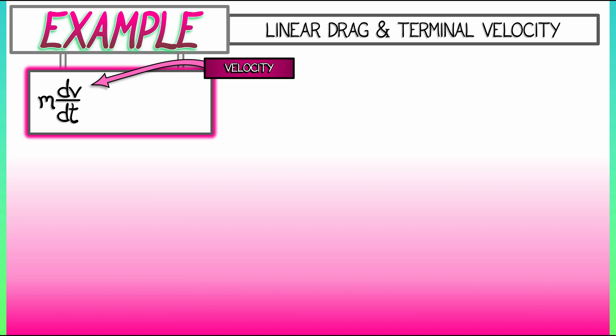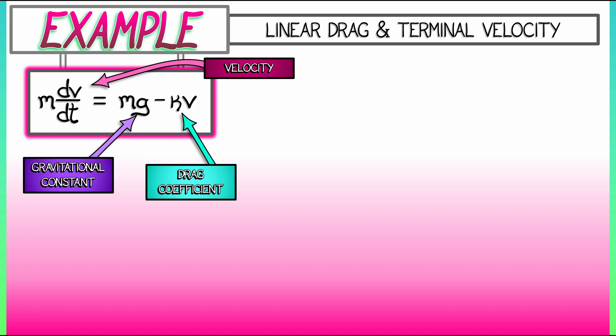And then Newton's second law says that that's equal to mg minus kappa v, where g is the gravitational constant and kappa is a drag coefficient. And this drag force is posited to be proportional to the velocity. The faster you go, the higher the drag force.